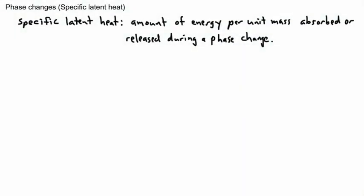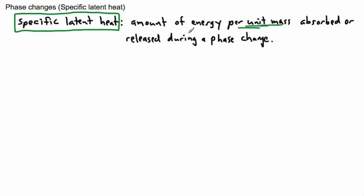When dealing with phase changes, we have something called specific latent heat. Anytime you have a change of phase — going from solid to liquid, or liquid to gas — you have energy associated with it. Just like specific heat capacity means energy per unit mass, specific latent heat is the amount of energy per unit mass that's absorbed or released during a phase change.